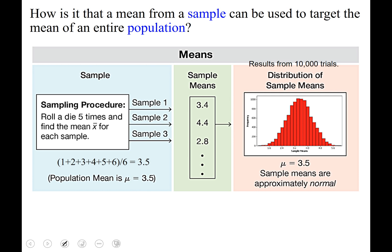So how is it that we can use the mean from just a sample and target an entire population's mean? We have a visual on one example why that works out. The procedure here is to roll a die five times and find the X bar for each sample. So the first time you do this procedure you get 3.4 is your sample mean. Then you get X bar equals 4.4. Then you get X bar is 2.8. Well we know that the population mean is 3.5. So how will X bar target this mu of 3.5?